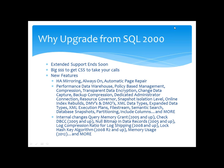Talking about why to upgrade from SQL 2000 — take a look at the new features. When you look at high availability, you've got mirroring, which was introduced in 2005. You've got Always On, which was introduced in SQL 2012. You've got to upgrade from 2000 to another version before you can go to 2012 — there's no direct step from SQL 2000 to 2012.